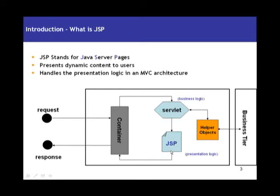JSPs are nothing but HTML with some amount of Java code in it. The control is passed to the JSPs, which represent the presentation layer. This acts as a presentation layer where you write your HTML with some dynamic Java code. Once JSPs complete all their processing, they send the response back to the container, which sends it back to the end user. This is how control flows in a web application with both servlets and JSPs in the picture. The role of the servlet is to handle business logic processing and pass the request to the JSPs, which take care of presentation logic and send the response back to the user.